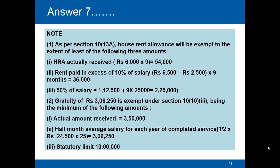Now the gratuity part. Gratuity of rupees 3,06,250 will be exempt under Section 10(10), being the minimum of the following amounts. First, actual gratuity received is rupees 3,50,000. Second, half-month average salary for each completed year of service: half into 24,500 into 25 years gives rupees 3,06,250. Note that 25 years and 9 months rounds down to 25 completed years. Third, the statutory limit is rupees 10 lakhs. The least is rupees 3,06,250.